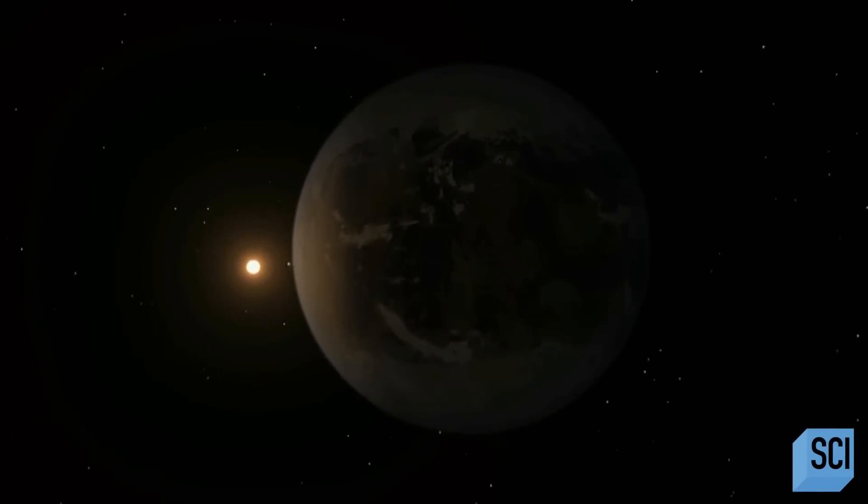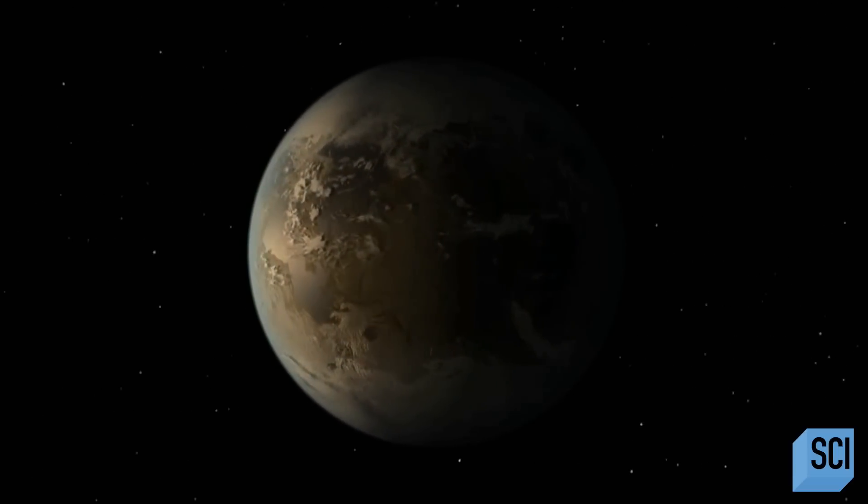If I got to ride on a spaceship to one planet that we found with Kepler, the one that I would go to was Kepler 186f. It's one of the smallest ones. It's at the right temperature that liquid water could exist on its surface.